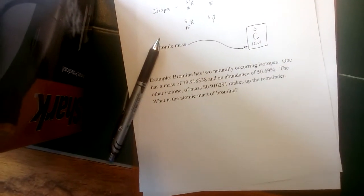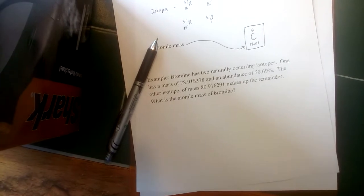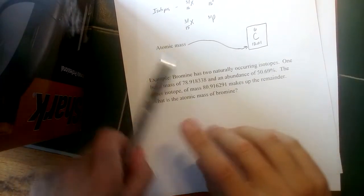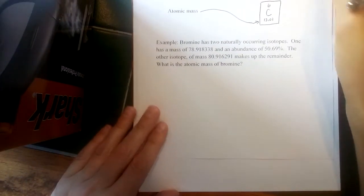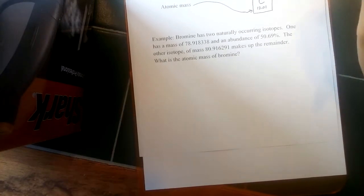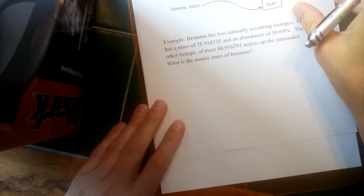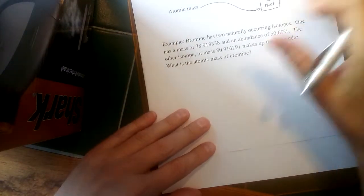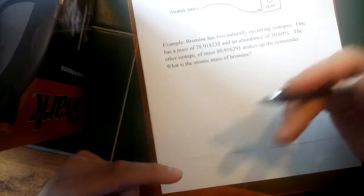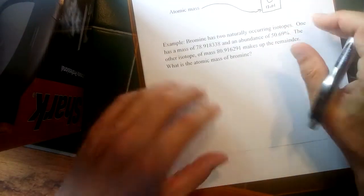Alright, so picking up where we were talking about atomic mass. Atomic mass is something we can find on the periodic table, but atomic mass is really a result of the fact that there's more than one isotope for a particular element.